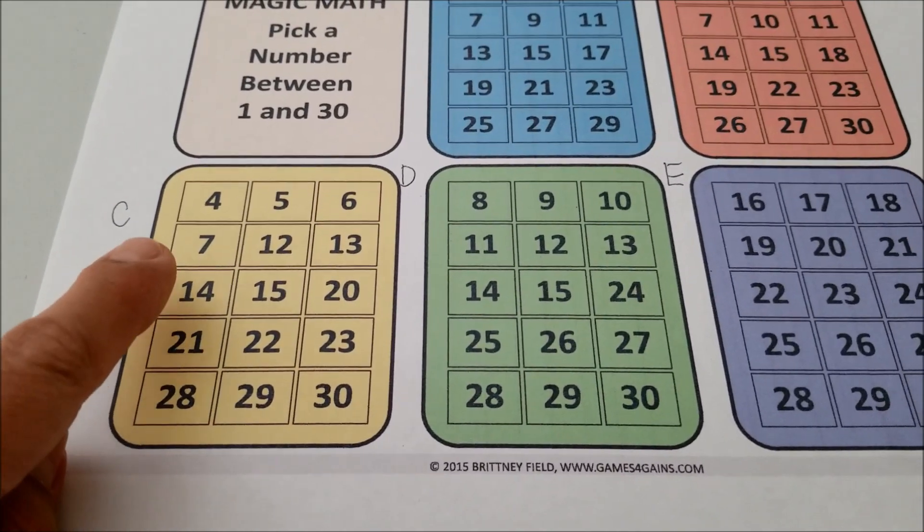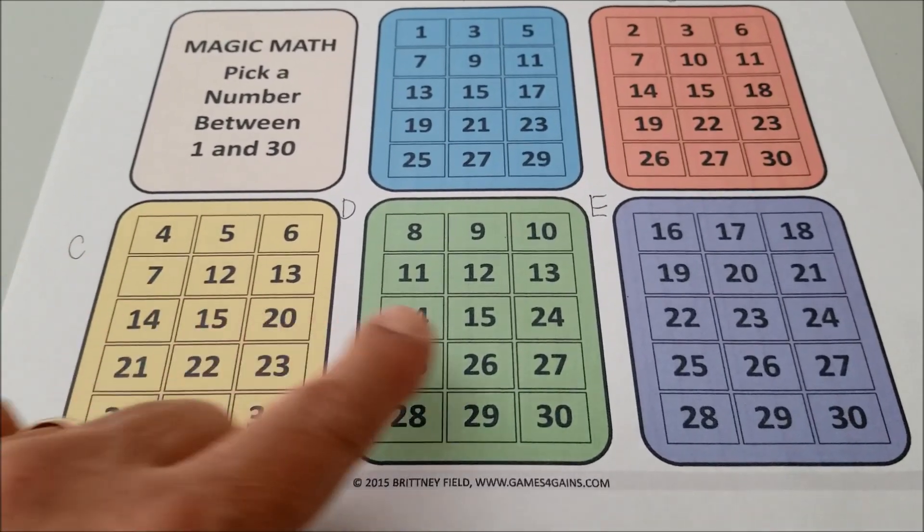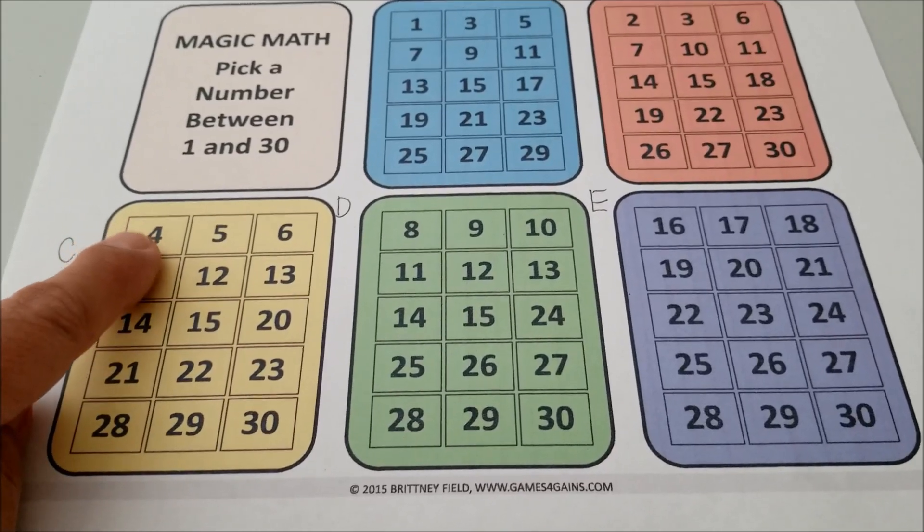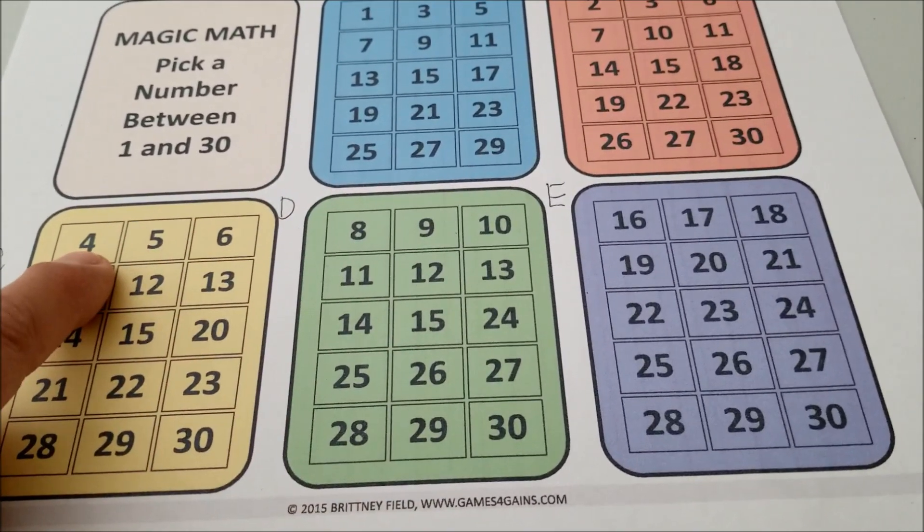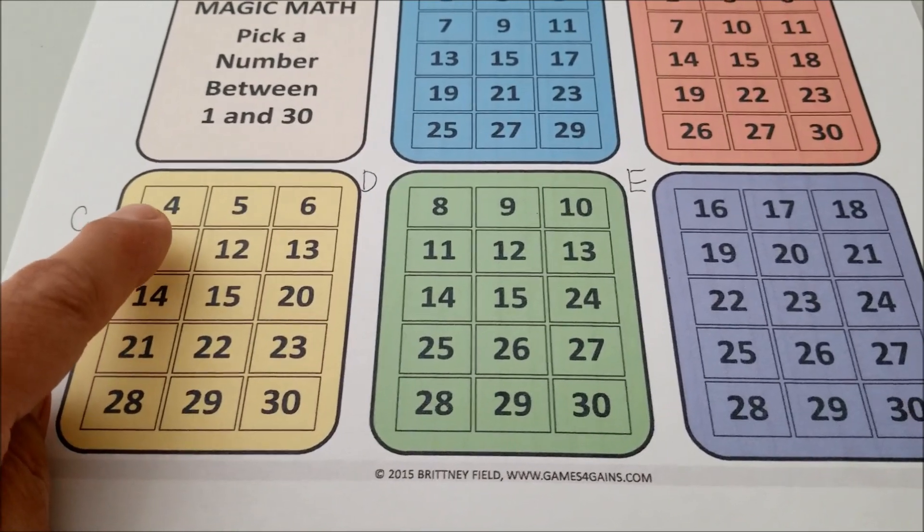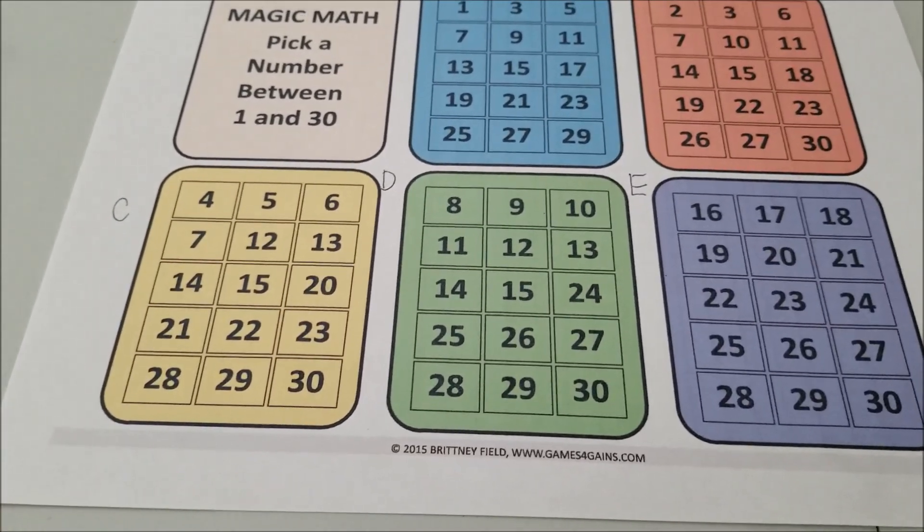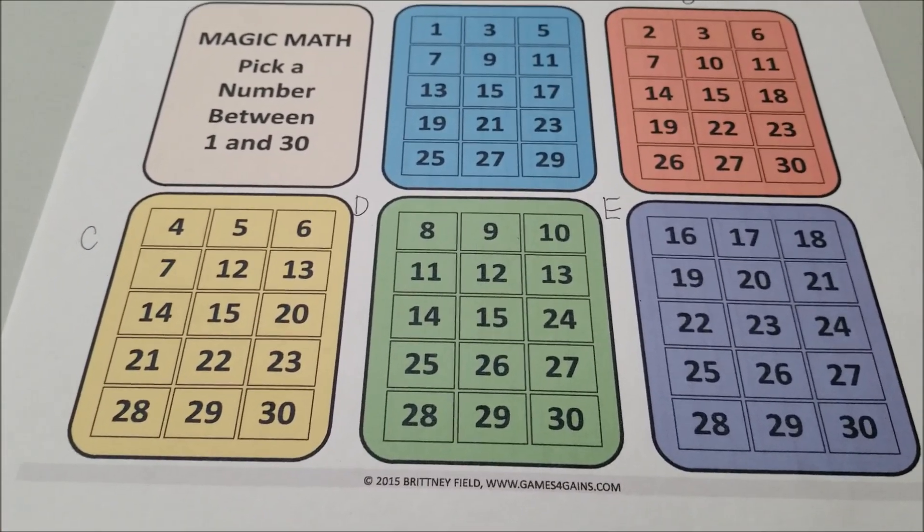Here's what you do. If somebody tells you that their number is in a certain box. So for my case, if the magic number was 12, here's all you do. You just add up the upper left number. So if my favorite number was in boxes C and D, you just add eight plus four, you get 12. And that's how you know the person's magic number.